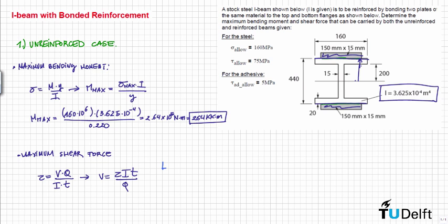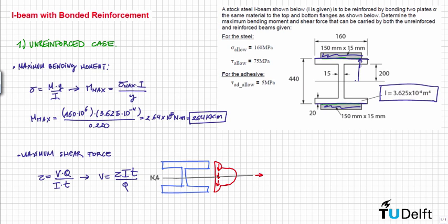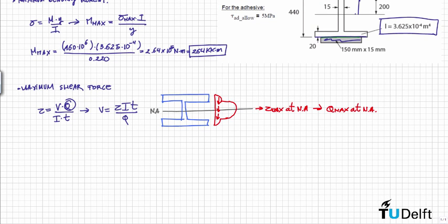For an I-section like this one, the shear stress profile varies through the cross-section. The thickness T is maximum at the neutral axis, and Q is also maximum at the neutral axis. Therefore we need to calculate Q at the neutral axis, so I will draw the cross-section again.